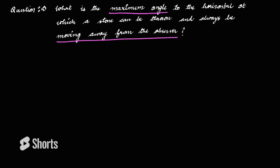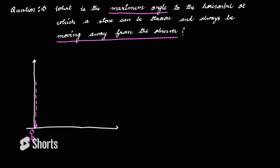The original problem asks: find the maximum angle to the horizontal at which a stone can be thrown and always be moving away from the observer. Let's take a few cases. If I take vertical motion, the particle moves up — it is moving away from the observer. But when it comes down, the distance between the observer and the particle is reducing. Therefore, it is not always moving away from the observer. So let's increase the angle a little bit.